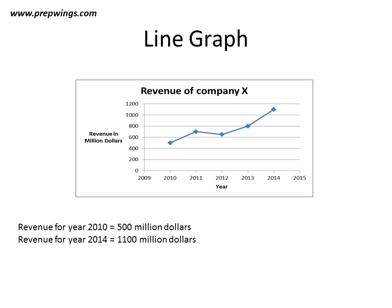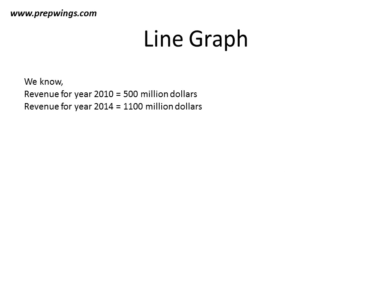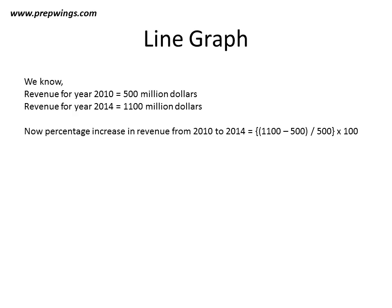Revenue for year 2010 was 500 million dollars from the graph, and revenue for year 2014 will be 1100 million dollars from the graph. The percentage increase in revenue from 2010 to 2014 is calculated as: 1100 minus 500, divided by 500, into 100 — applying the formula for percentage change.